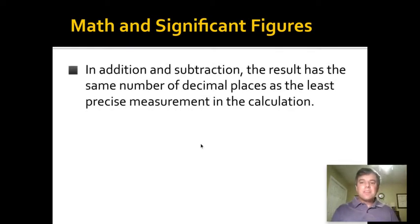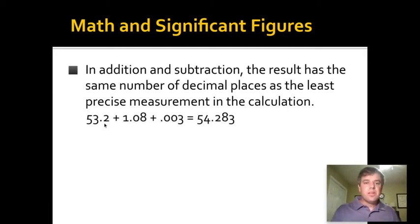When you add and subtract, what matters is the number of decimal places. So if you take 53.2 plus 1.08 plus 0.003 and you add those, your calculator would say the answer is 54.283. So this number goes to the tenths place, this goes to the hundredths place, this goes to the thousandths place. We're going to round our answer off to just the tenths place, so we'll call this 54 point—and this eight will cause us to round the two up—so we'll call it 54.3.